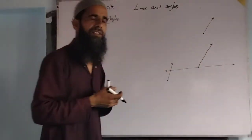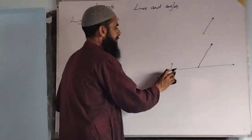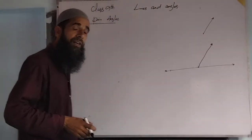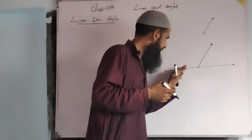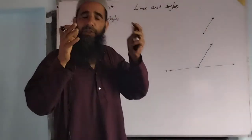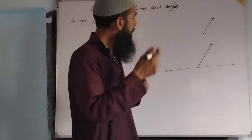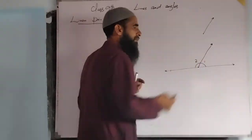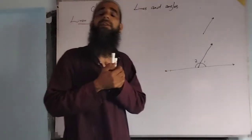Here students, we have a situation: if we have a line and we have a ray standing at a fixed point on the given line, we get two angles — angle 1 and angle 2. These two angles are called linear pair angles.